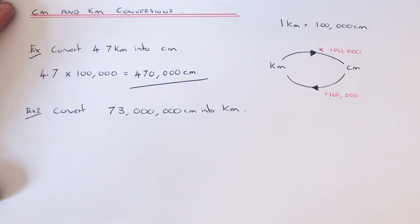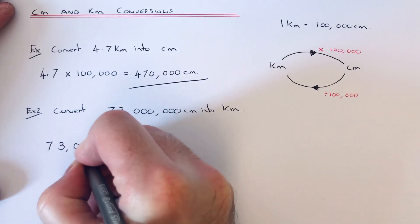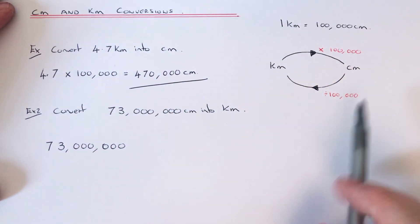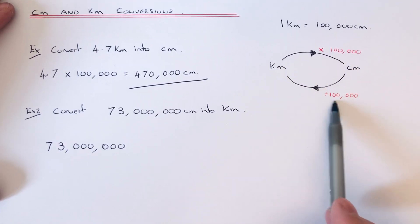Let's look at the second example. This time we've got to convert 73 million centimeters into kilometers. So if you write 73 million down first of all, to get from centimeters into kilometers, we divide the number by 100,000.